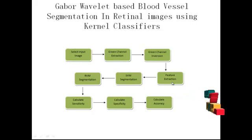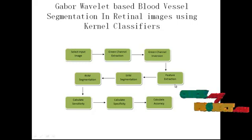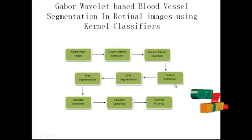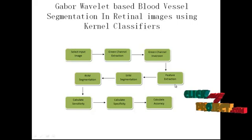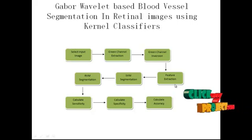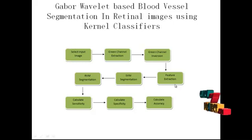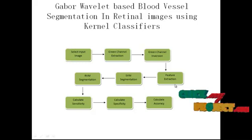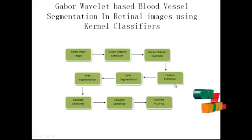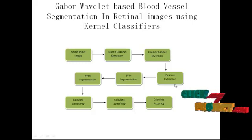For feature extraction, GABOR wavelet is used — it can detect vessels in any orientation, position, and scale. The GABOR wavelet transform is computed for theta spanning from 0 degrees up to 170 degrees at steps of 10 degrees, and the maximum response is taken.